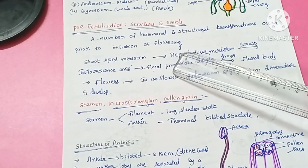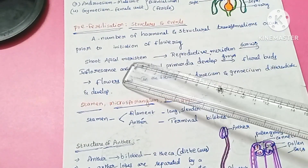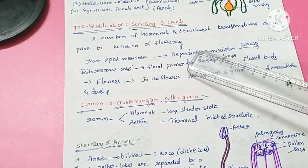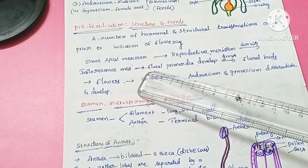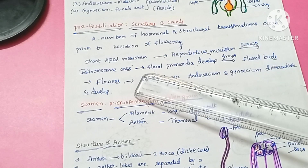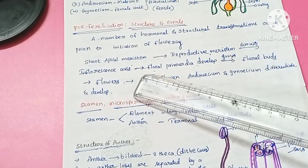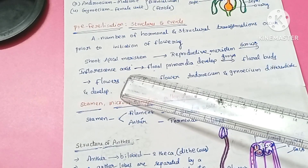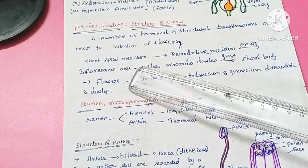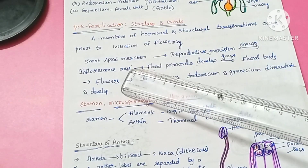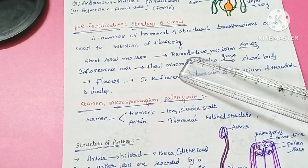Now we will see about the pre-fertilization structures and events. A number of hormonal and structural transformations occur prior to the initiation of flowering. These transformations involve the shoot apical meristem being transformed into the reproductive meristem.